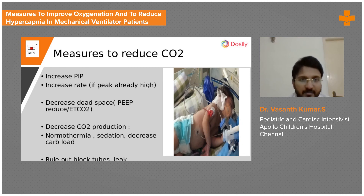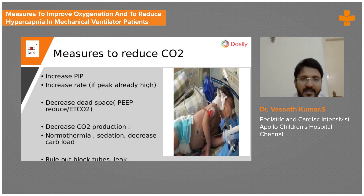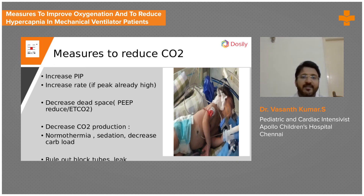Which parameter to adjust depends on what is already at its maximum. If PIP is already at its maximum — say 25 or 26 — do not increase it further; instead, increase the respiratory rate, for example from 20 to 22 or 24. If rate is already high — around 25 to 26 for adults — then obviously increase the PIP. Whichever parameter is already at its maximum, leave it and adjust the other.